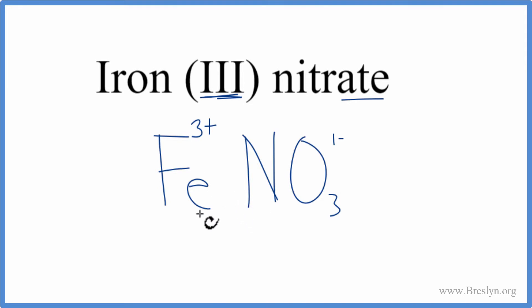What we can do is change the subscripts here to make that happen, and we'll use something called the criss-cross method. We'll move the three out here and the one right here. We don't write the one by convention, so we can get rid of the charges. And then we do need to put parentheses around the whole nitrate ion because we have three of these nitrates. So that's the formula for iron three nitrate.